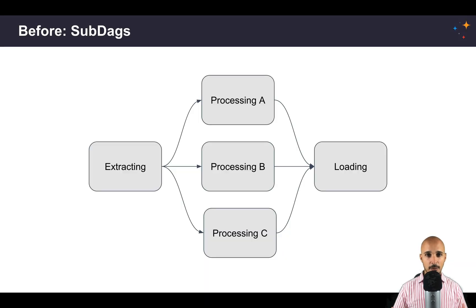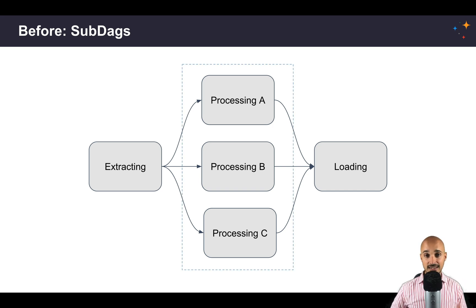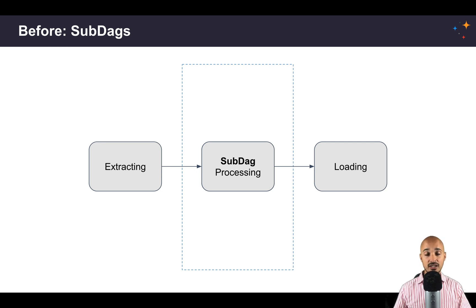Let's use the following data pipeline as an example. Here you have the task extracting, then three different tasks processing A, B, and C that you can execute in parallel, and finally loading. One thing you could do is group the tasks processing A, B, and C together to make that data pipeline clearer, and to do this you would use a sub DAG. A sub DAG is nothing more than a new DAG triggered inside your parent DAG, and in that sub DAG you will have the tasks processing A, B, and C.